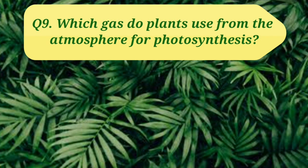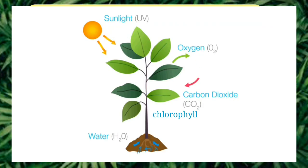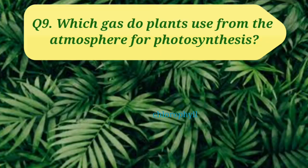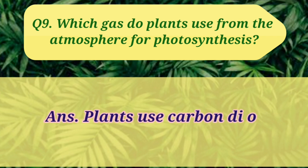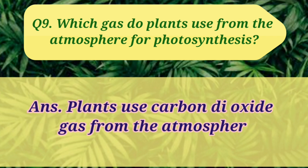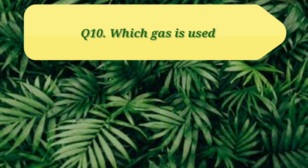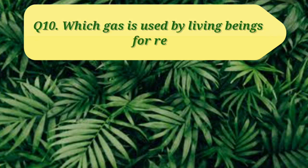Question 9: Which gas do plants use from the atmosphere for photosynthesis? Students, do you know what photosynthesis is? Photosynthesis is the process in which green plants use sunlight, chlorophyll, water, and carbon dioxide gas to make their own food. Let us write the answer: Plants use carbon dioxide gas from the atmosphere for photosynthesis.